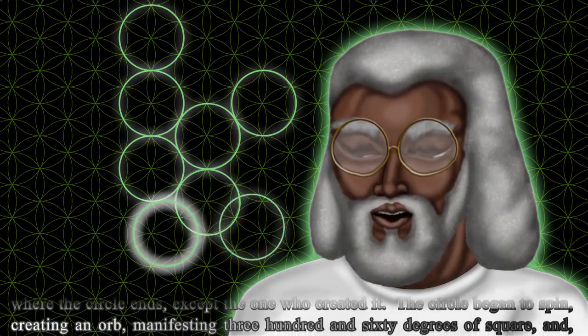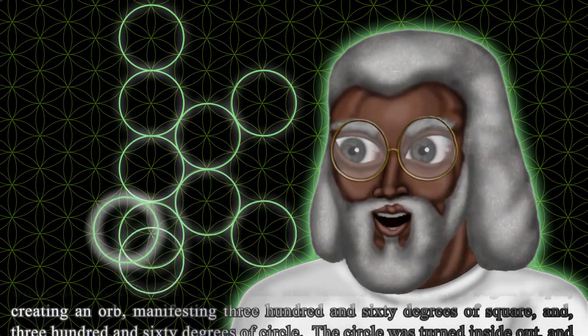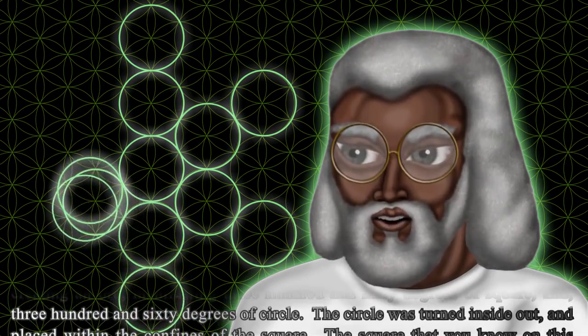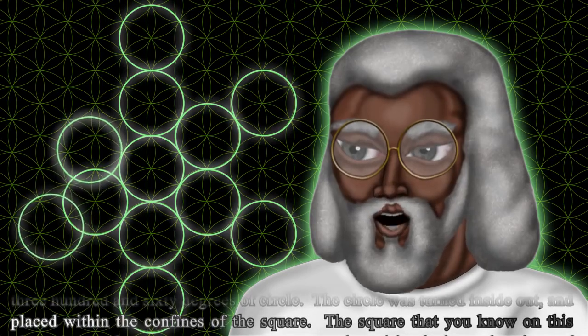The circle began to spin, creating an orb, manifesting 360 degrees of square and 360 degrees of circle. The circle was turned inside out and placed within the confines of the square.